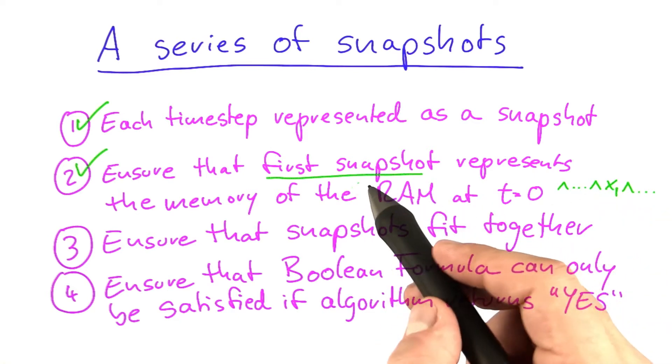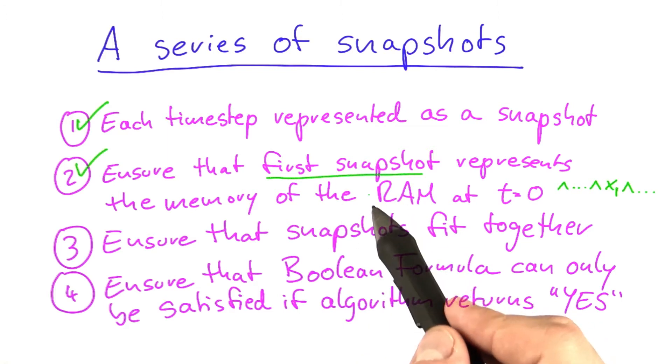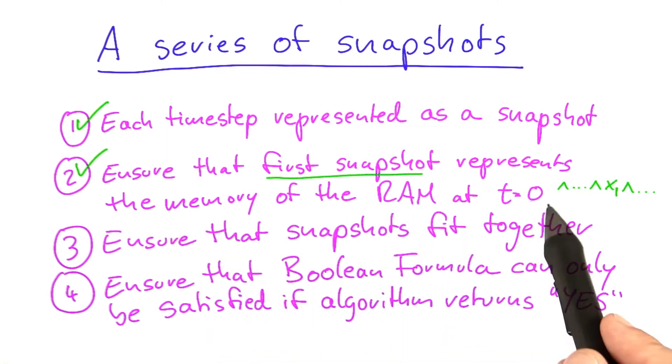So in this way, you can enforce the Boolean formula that represents the first snapshot to present the memory of the RAM exactly at time point t equals 0.